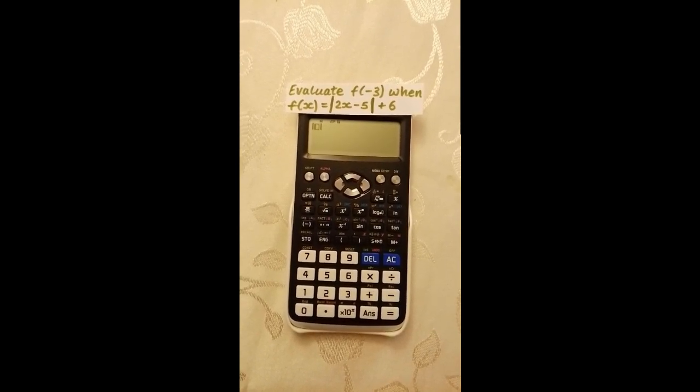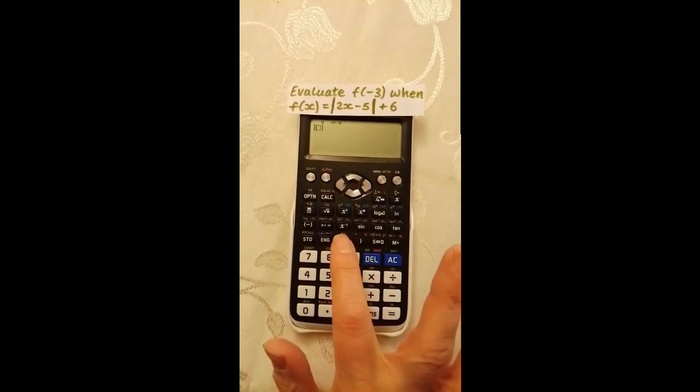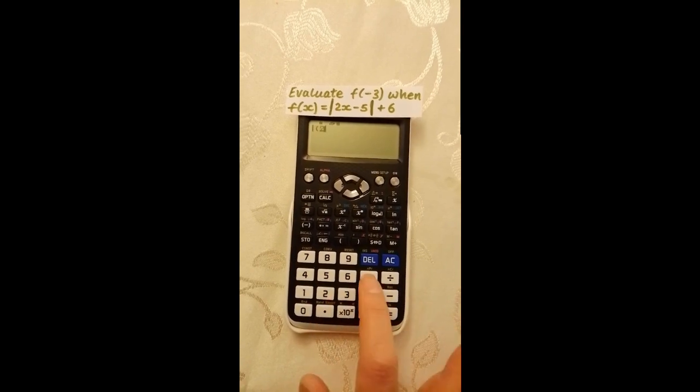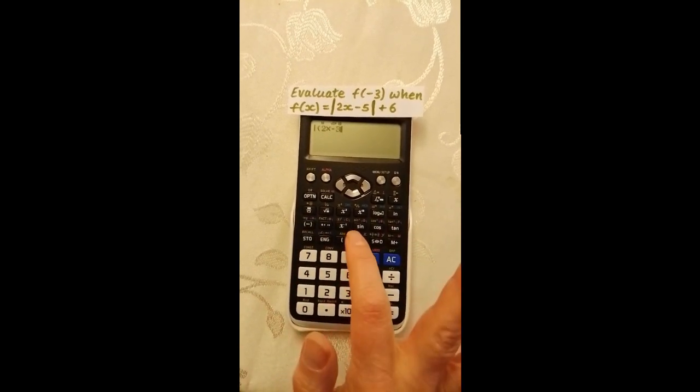Within the modulus lines, type in brackets 2 times negative 3, close brackets.